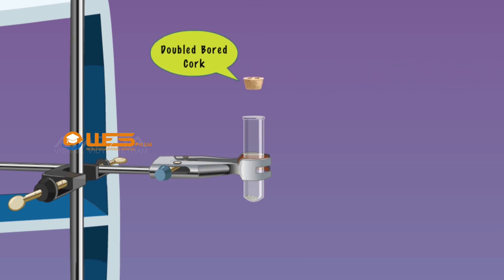Cork the boiling tube with a double-bored cork. Insert a thermometer through one bore of the cork. Keep the bulb of the thermometer about three to five centimeters from the surface of the water.